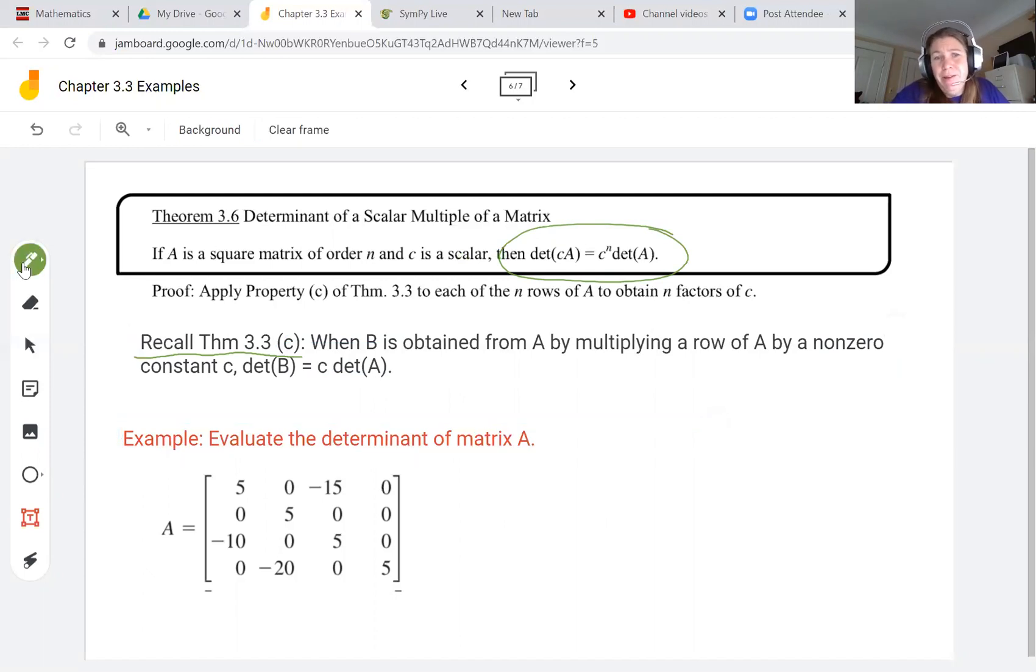When matrix B is obtained from matrix A by multiplying a row of A by a non-zero constant C, then the determinant of B equals C times the determinant of A.